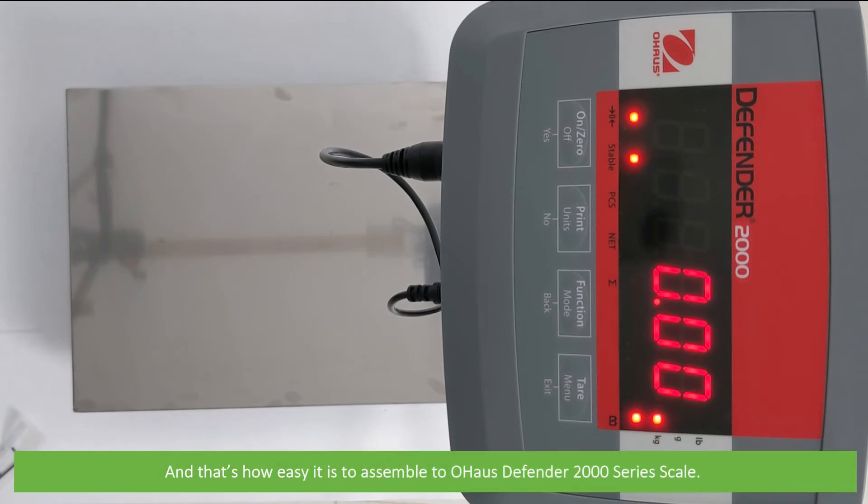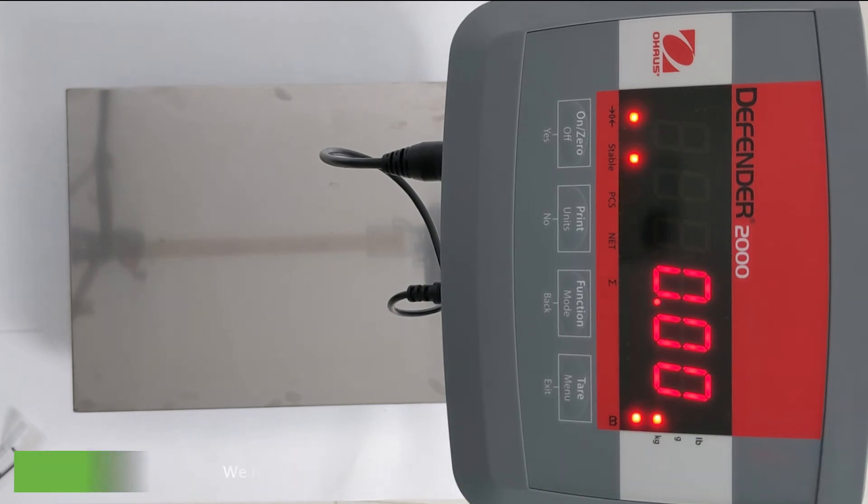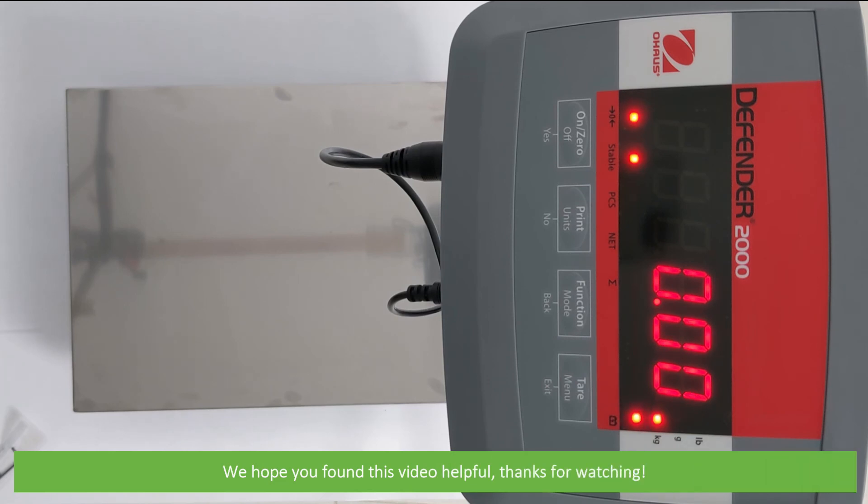And that's how easy it is to assemble the O-House Defender 2000 series scale. If you want more information on this scale, the IC-D24PE 150FL, or the O-House range of scales and balances available at Instrument Choice, see the links in the video description. We hope that you found this video helpful. Thanks for watching.